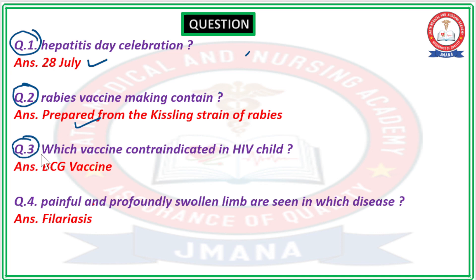Question number 3: Which vaccine is contraindicated in an HIV child? If a child is already HIV infected, which type of vaccine is considered contraindicated — meaning it is not given to them?